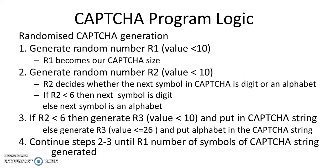This way we generate one CAPTCHA symbol at a time, either a digit or an alphabet. We continue steps 2 and 3 until all symbols of CAPTCHA are generated. The size of CAPTCHA is given by our random number R1.